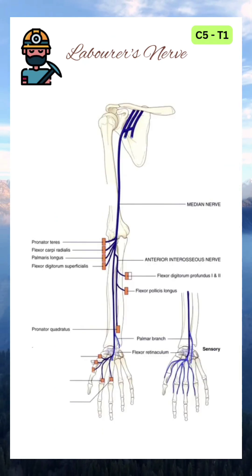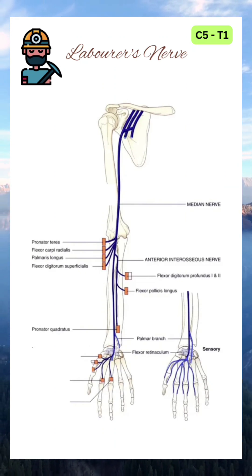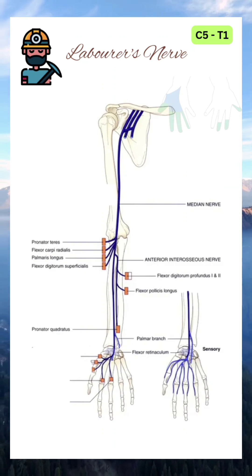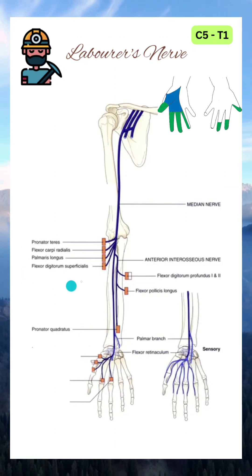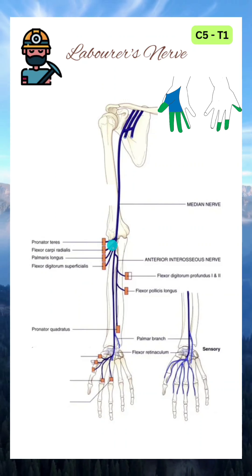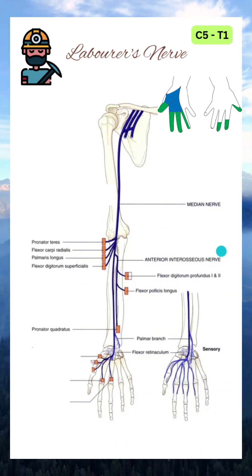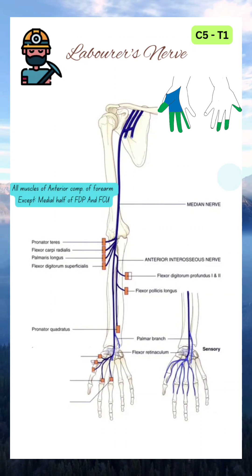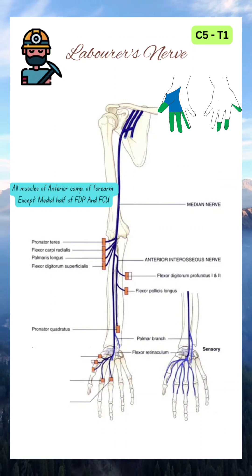No branch is given in the arm. It enters the cubital fossa, where it supplies the superficial muscles of the anterior compartment of the forearm, except for flexor carpi ulnaris. It then gives rise to a branch called the anterior interosseous nerve, which supplies all the deep muscles of the anterior compartment of the forearm, except for the medial half of flexor digitorum profundus, which is supplied by the ulnar nerve.